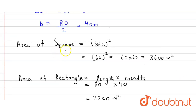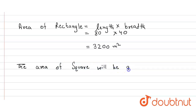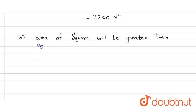So the area of the square is greater than the area of the rectangle, and that is our answer.